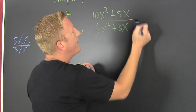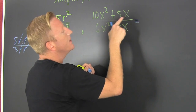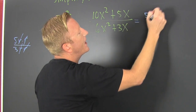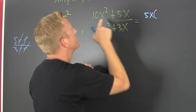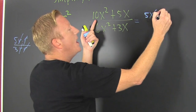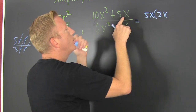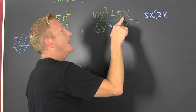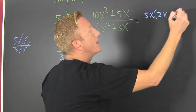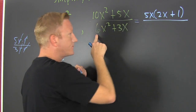So I need to factor out the common factor from each one of those terms. The common factor here is a 5x. What do I multiply 5x by to get 10x squared? I multiply it by 2x. What do I multiply 5x by to get 5x? Plus 1.